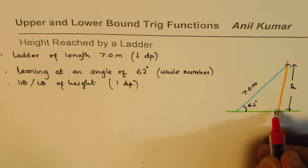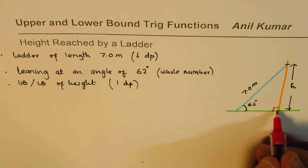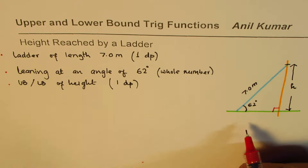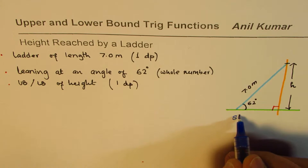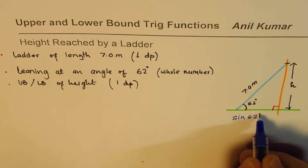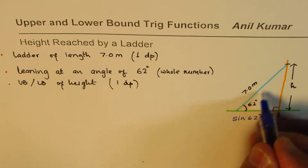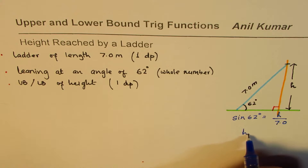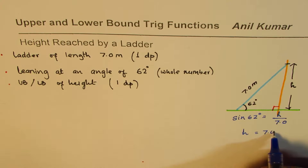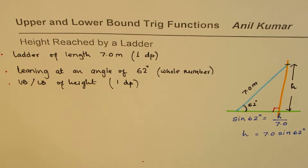We have a right triangle — we assume the wall is perpendicular to the ground, so this is a 90-degree angle. We know that sine θ = sine of 62 degrees = opposite side (height) divided by hypotenuse (7.0). From here, height = 7.0 × sine(62°).